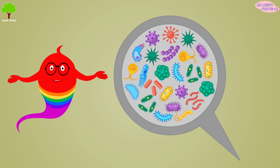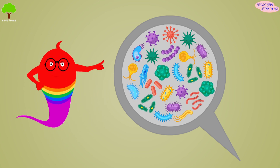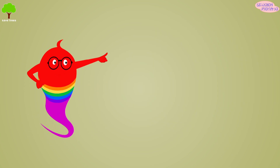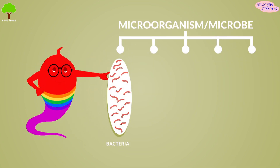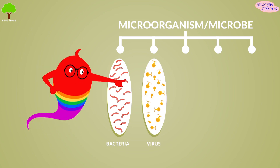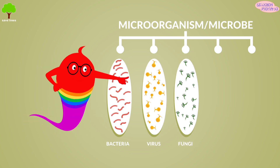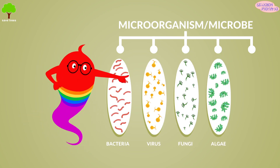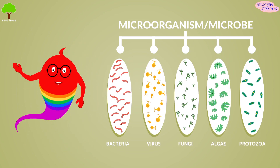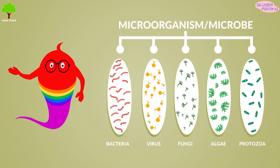Scientists classify them in five types. They are bacteria, viruses, fungi, algae, and protozoa. Let's learn about them one by one.